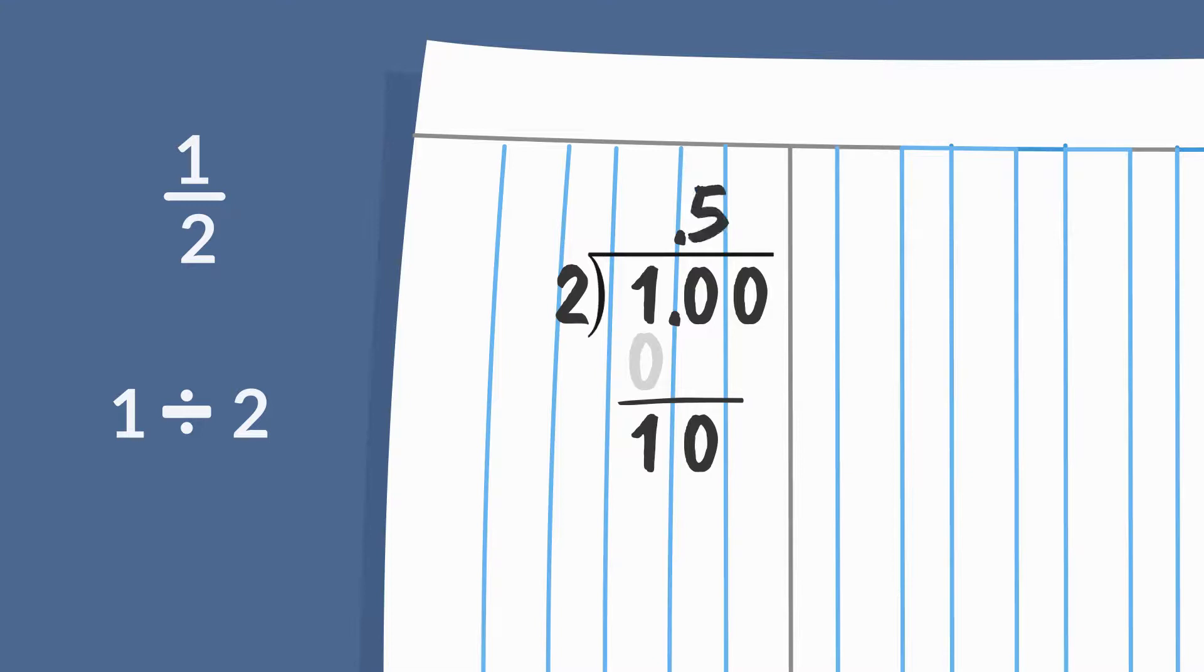Bring the first zero down, so you can continue dividing. How many times does two go into ten? Five times. Now your quotient should read .5. Five times two is ten, and ten minus ten is zero, so you could stop there.